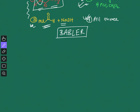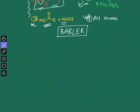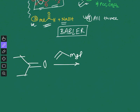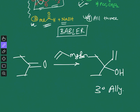Now we are left with only option 2, the Babler oxidation reaction. The substrate — a ketone — is first treated with vinyl magnesium bromide, a Grignard reagent, which does a 1,2-addition reaction to give a tertiary allylic alcohol. This tertiary allylic alcohol is the substrate for the Babler reaction.